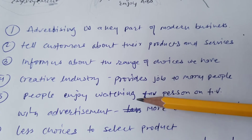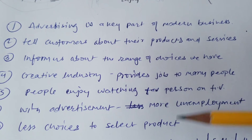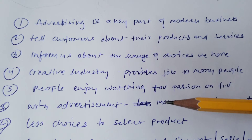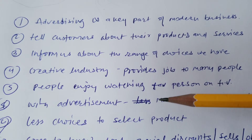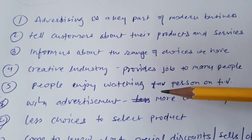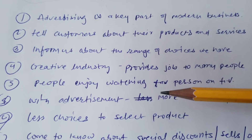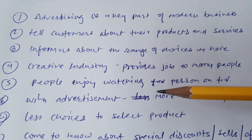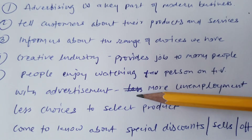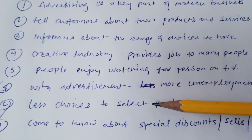Bullet point five: people enjoy watching their favorite person on television. For example, Deepika Padukone is a favorite actor of many people and people love to see her on screen. So people enjoy watching these celebrities on television while those celebrities are also promoting your product through the advertisement.